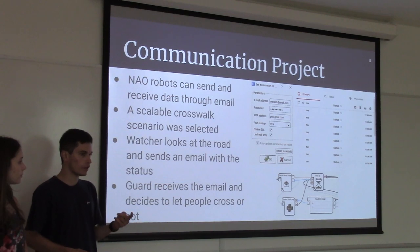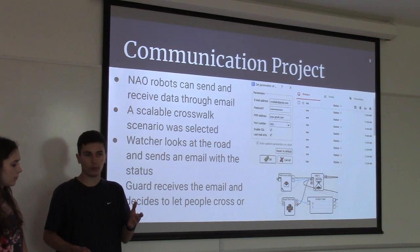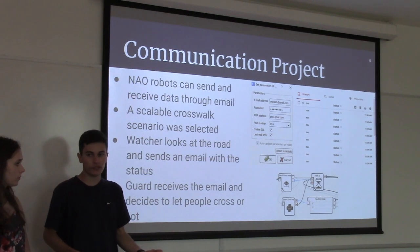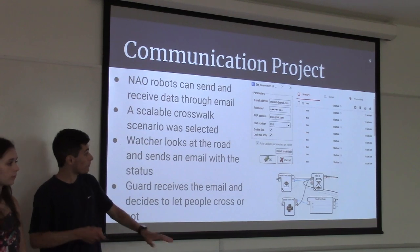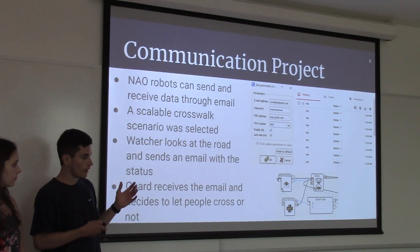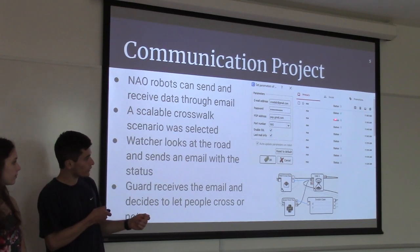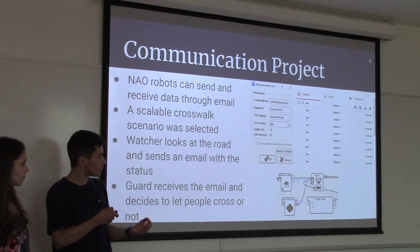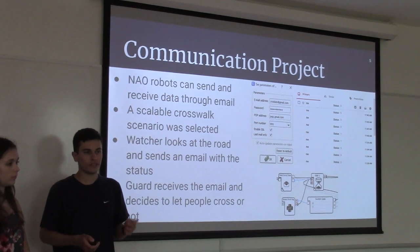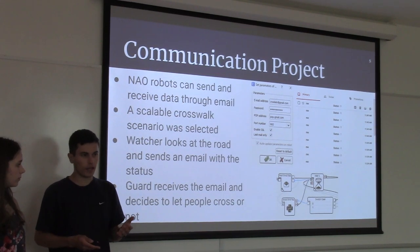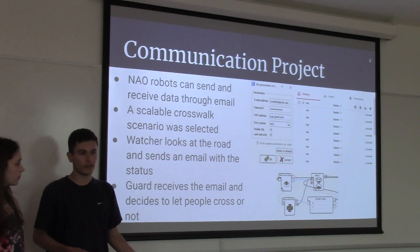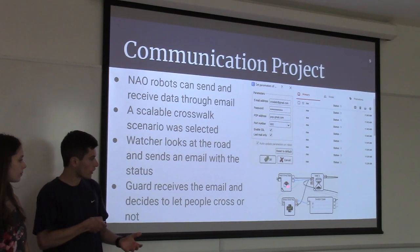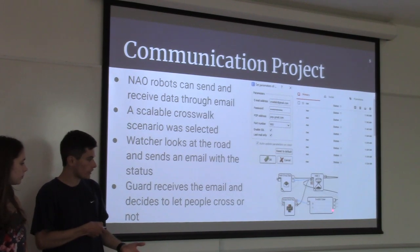The scenario consists of two robots: a watcher and a guard. The watcher watches the road and decides if a car is present or not, then sends an email with the corresponding message to the other robot. Both robots are using the same email account inbox. The guard takes the email, reads it, makes sure it is the correct format, and extracts the message. It then decides whether to let people cross or not depending on several conditions — one being if the road is clear, the other if a person is present. A snippet of the crossing guard code is shown here, where it fetches the email, extracts the message, and makes a decision based on the contents.